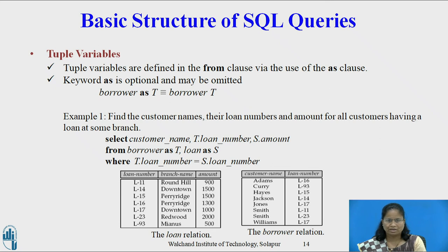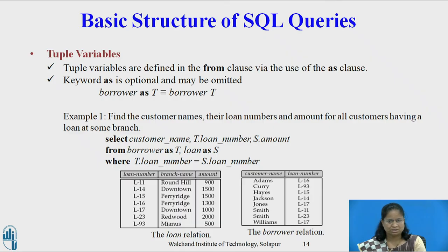Tuple variables are defined in the FROM clause by placing them after the name of the relation with which they are associated, with the keyword AS in between. The keyword AS is optional and may be omitted — so BORROWER AS T is equivalent to BORROWER T. Tuple variables are most useful for comparing two tuples in the same relation. Example: SELECT CUSTOMER_NAME, T.LOAN_NUMBER, S.LOAN_NUMBER FROM BORROWER AS T, LOAN AS S WHERE T.LOAN_NUMBER = S.LOAN_NUMBER.